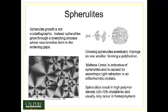This is what a spherulite looks like in cross-polarized light. You can see that it has a grain boundary-like structure similar to that found in metals. The Maltese cross is indicative of anisotropic light refraction in the orthorhombic crystal structure. Spherulites result in relatively high polymer density because they tightly pack the molecular chains together. They usually only occur in homopolymers — polymers made entirely of one type of mer structure — because with a single mer structure you have a simpler organization of the polymer and are more likely to form a crystal structure.